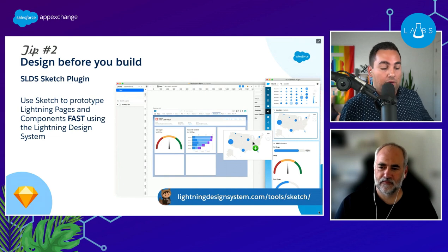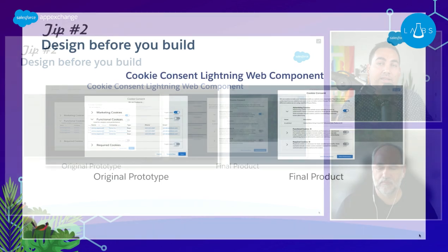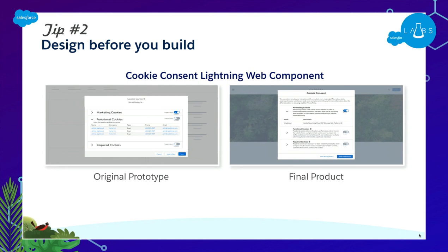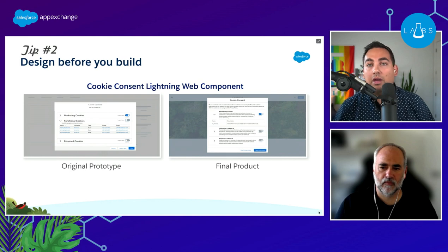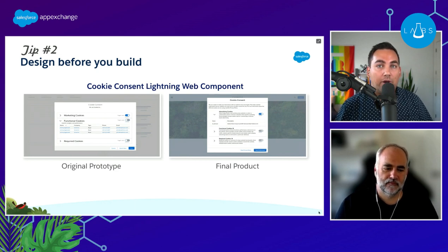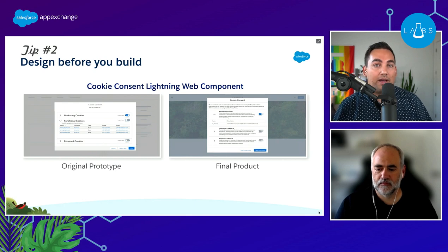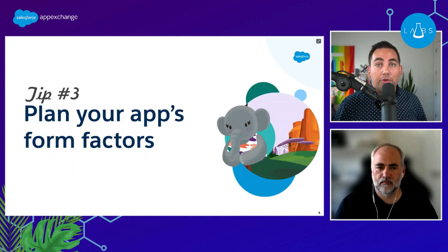An example where this was useful was the Cookie Consent Component. There are many ways that gathering cookie consent can appear on a page, so I mocked it up and shared it with users for feedback. On the left you can see the actual mock-ups in Sketch created before building the LWC, and on the right the final product. By the time I was actually writing the code, I was finished in maybe three or four hours — because I already knew the underlying data and design, I could reference standard base components like dropdowns, toggles, and tables from the Lightning Design System.